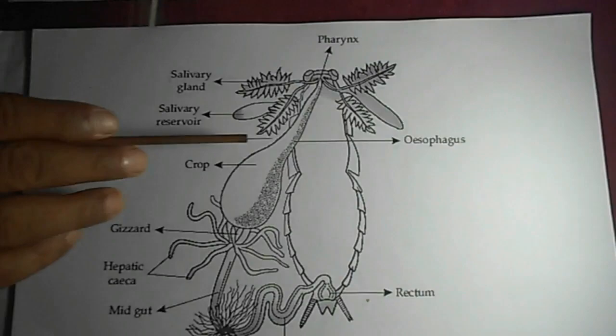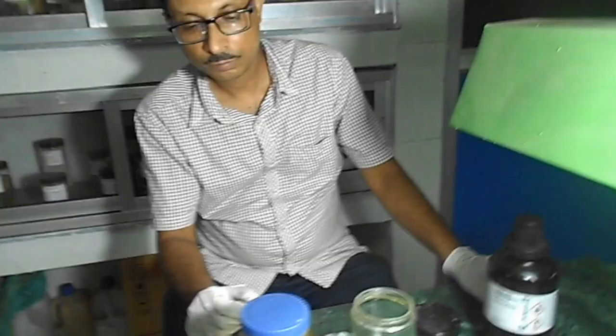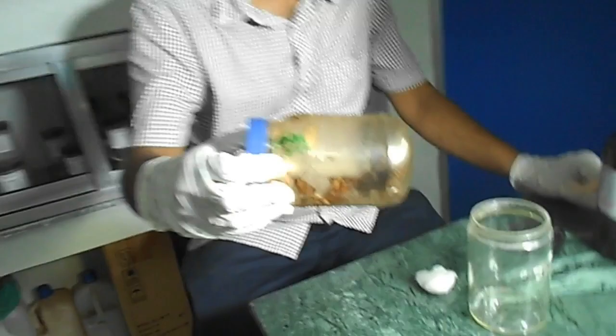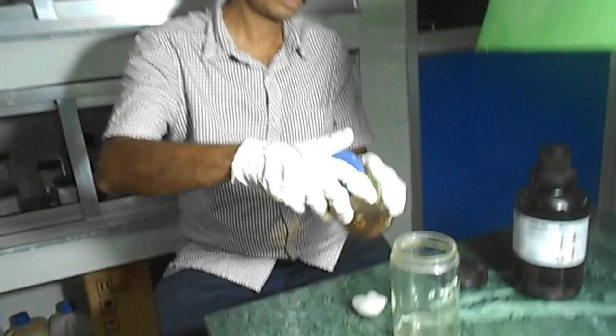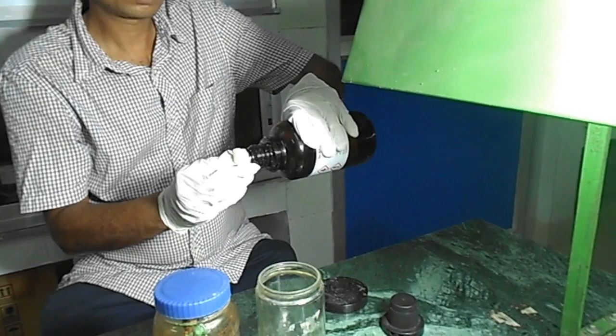Now let's start and see the dissecting part of the digestive system of cockroach. First of all, we have to kill the cockroach. In our lab, before dissection, we collect cockroaches from storehouses, godowns, and kitchens. My friend demonstrates how we kill cockroaches in our lab. First of all, he soaks a cotton ball with chloroform and places this chloroform cotton ball in a plastic jar.